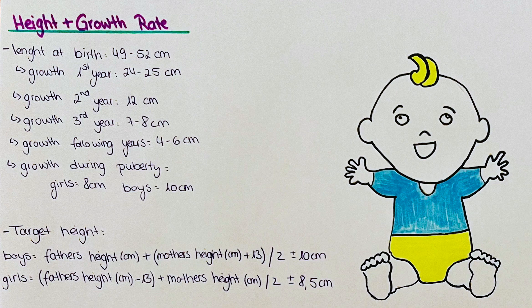During the first year of the baby's life, the baby grows around 24 to 25 centimeters. During the second year of life, the baby grows around 12 centimeters. To remember these numbers of the first years, I try to think of the sentence cut in half.